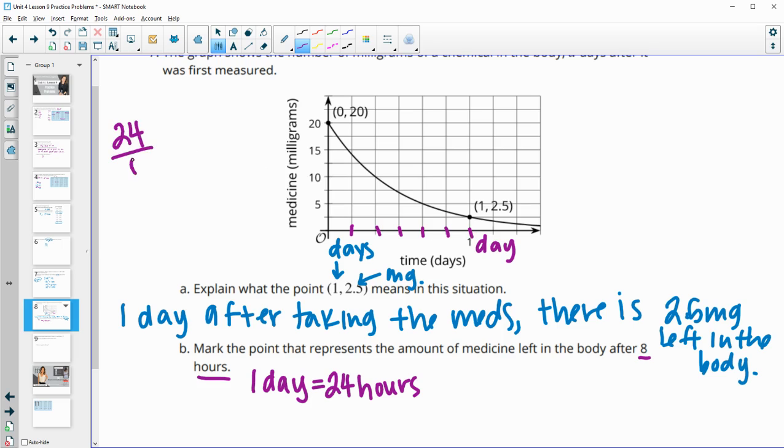So let's do 24 divided by six, and we find out that each dash is four hours. So this one right here is four, this one right here is eight, which is what we're looking for. So we're going to go up to eight and the point would be right here. If you wanted to label it, you could, since it appears to be exactly at 10.